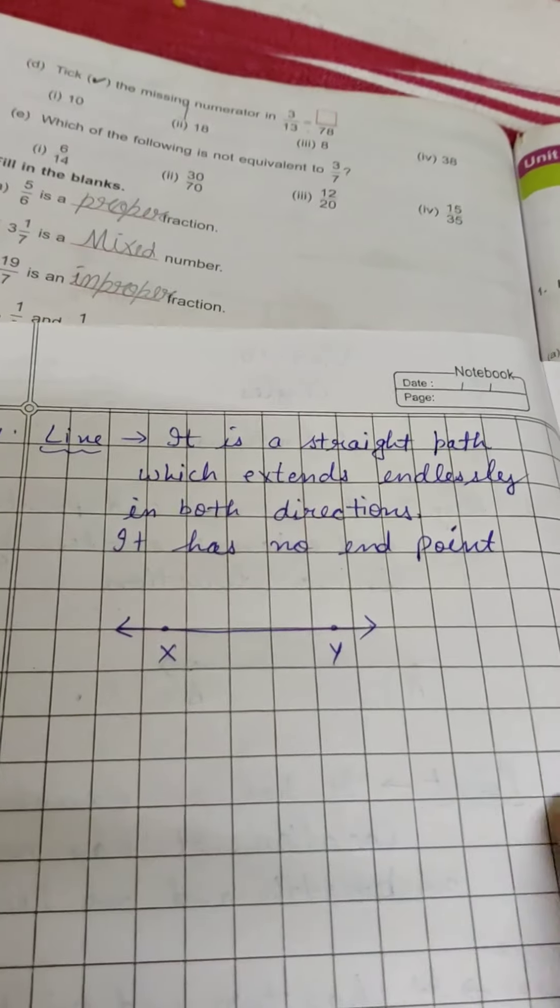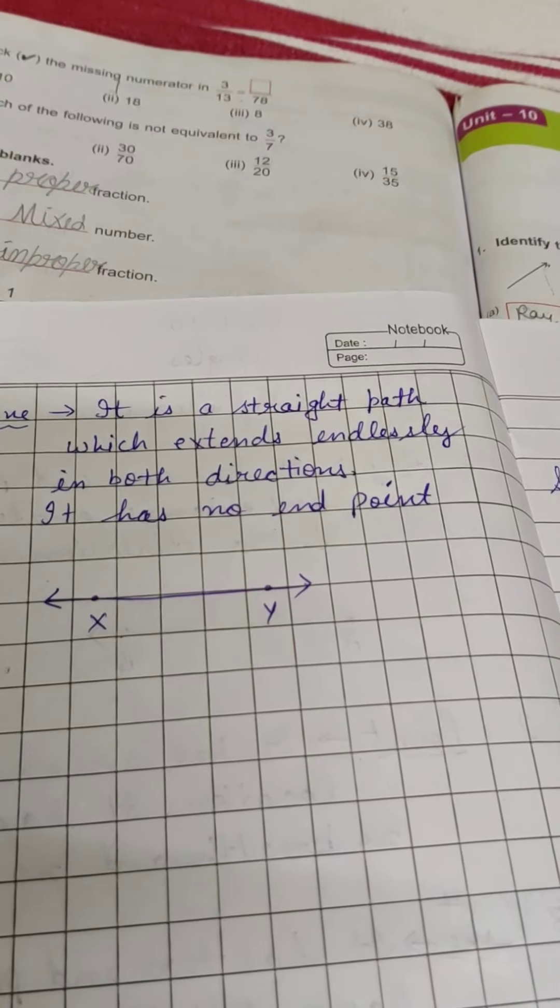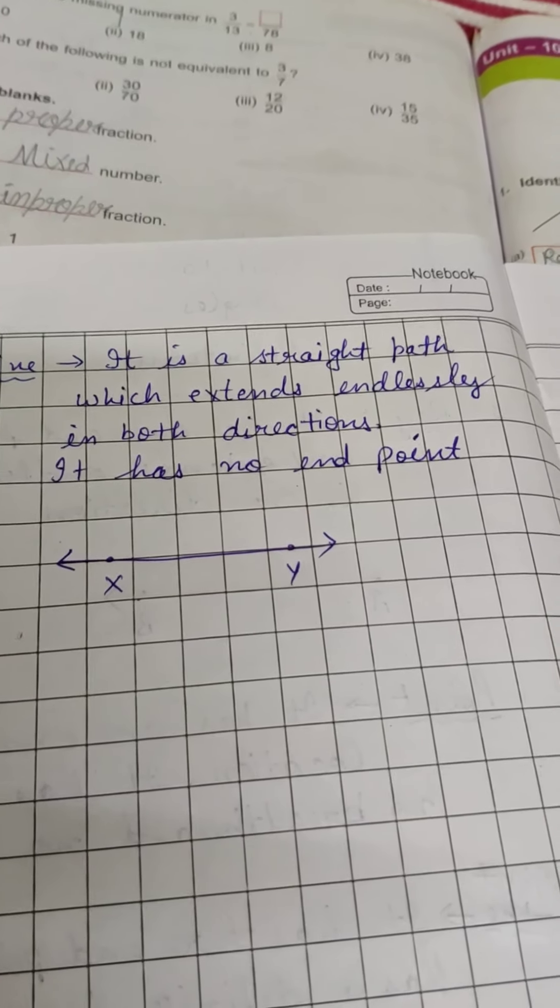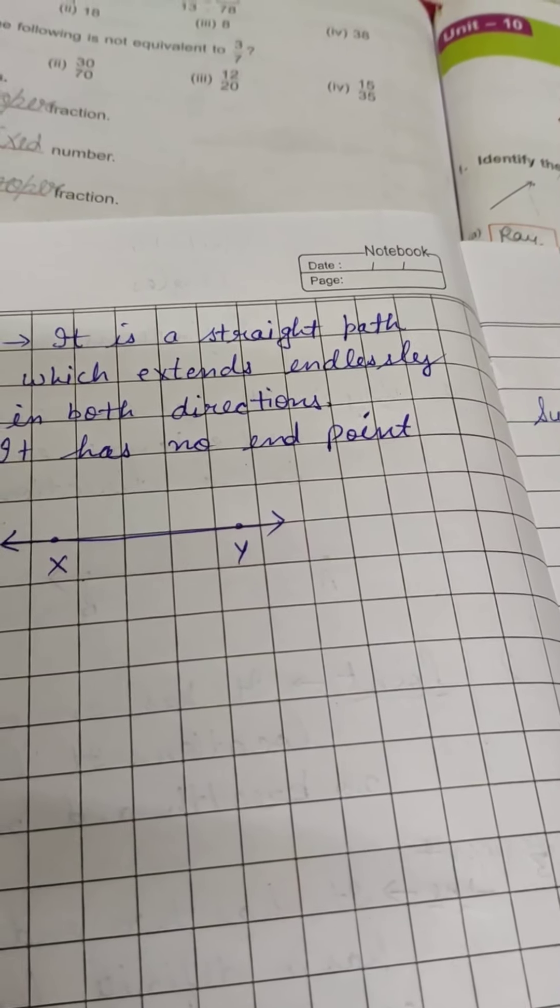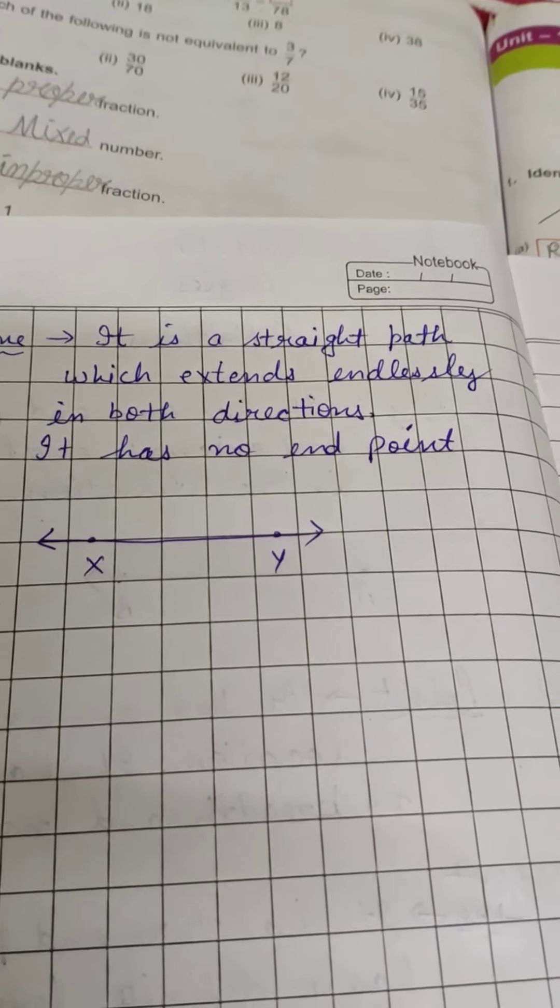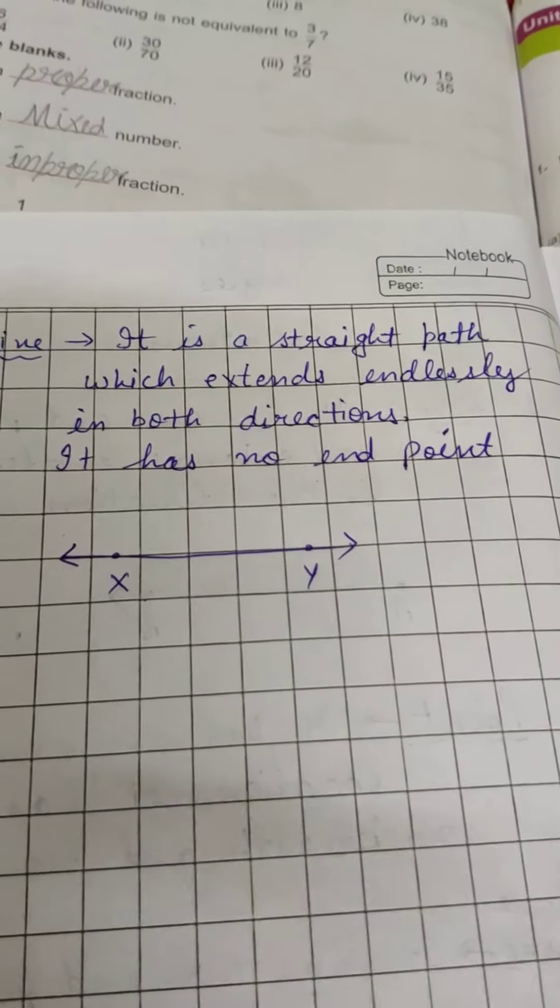Next one, line. It is a straight path which extends endlessly in both directions. Which goes in both directions continuously. Otherwise, we don't know the starting point. Otherwise, we don't know the ending point. This is why both sides have arrows. Both sides go continuously.